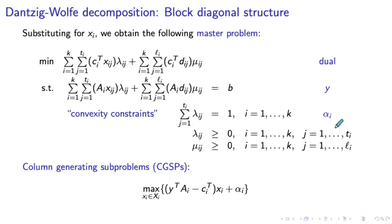Once we have the dual optimal solution to the restricted master problem, we can formulate the column-generating subproblem. In this case, it actually collapses into k different column-generating subproblems, because there are k groups of variables corresponding to the k different blocks, and we can formulate the column-generating subproblem separately for each block. The i-th column-generating subproblem looks like this: we maximize Y^T * Ai minus Ci^T, all multiplied by xi, plus αi, over xi belonging to set Xi (capital). We denote this optimal objective value by Ẑi.